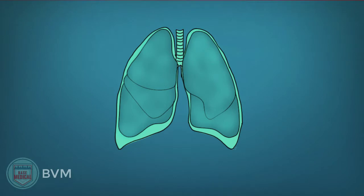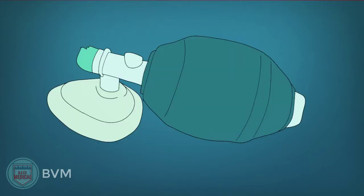If breathing is inadequate or absent and the patient is unconscious, then we have to breathe for the patient. We do this with a bag valve mask, or BVM. Ideally, a BVM is attached to an oxygen supply at 15 liters per minute, delivering nearly 100% oxygen concentration, but it can be used without oxygen — however, the concentration will only be that of the atmosphere, about 21%. This device can and should be used with airway adjuncts.